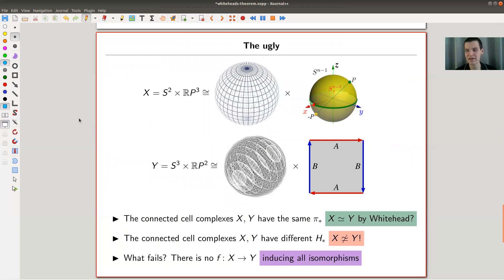So let me discuss the ugly a little bit, kind of this standard example here. So you can take a space which is certainly a cell complex, X, and another space which is also certainly a cell complex, Y, and the difference is almost silly. So you have S², so this picture, and you cross it with RP³. So you have two and three here, so it's a 2-3 space if you want. This is my funny illustration of RP³. So RP³ is the sphere modulo the antipodal map.